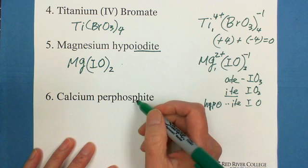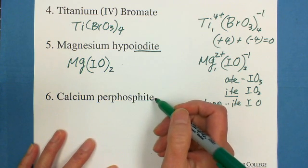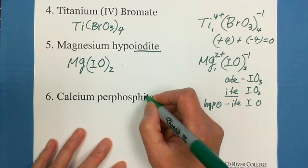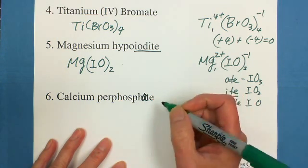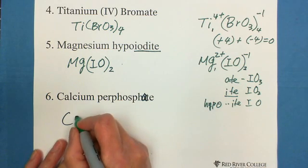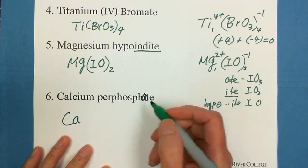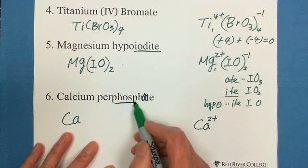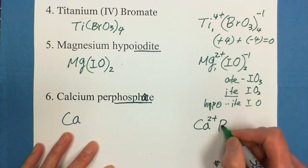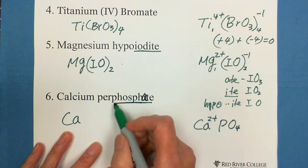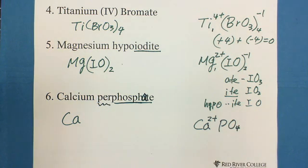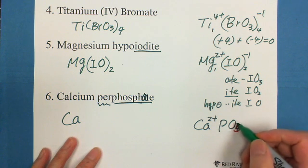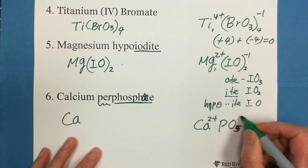The last one is calcium perphosphate. Calcium is Ca. Phosphate, we can see Ca is calcium, it's 2 positive. And phosphate is PO4. And then the per means 1 more. So that's why we have PO5. We need to write PO5.